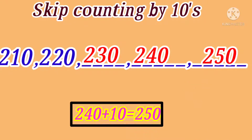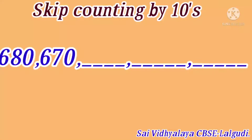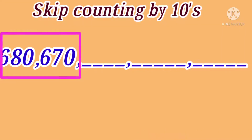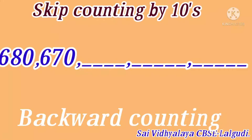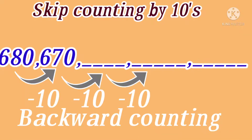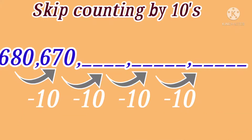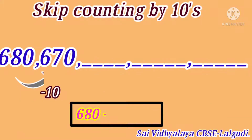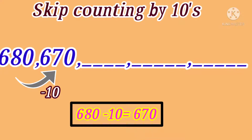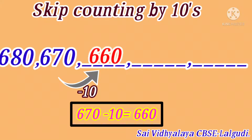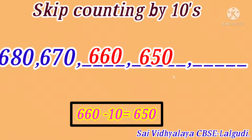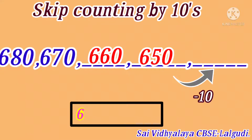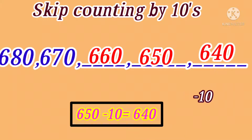Now look at the next example: 680, 670. Here the numbers are in backward counting order, so we should subtract number 10 repeatedly to get the next number. 680 minus 10 is equal to 670. 670 minus 10 is equal to 660. 660 minus 10 is equal to 650. 650 minus 10 is equal to 640.